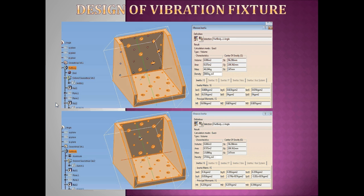The equipment under testing can be a structure, an electrical equipment, or electronic equipment. In the first picture I have used steel material for the construction of the vibration fixture. The density of steel is 7860 kg per meter cube, giving a mass of 46.104 kg. In the second picture I have used aluminum material, which has a density of 2710 kg per meter cube, giving a mass of 15.896 kg.